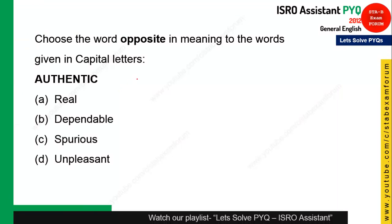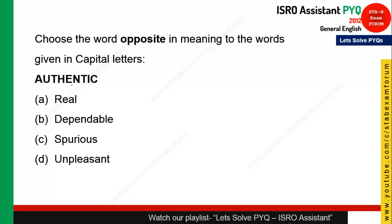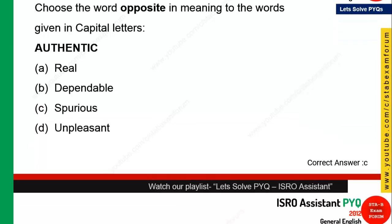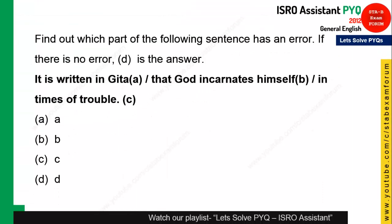The next question is again from antonyms. The word is 'authentic'. The synonym of authentic is 'real', but they are asking for the opposite — the antonym. The antonym of authentic is the word meaning fake, which is not real. So option C is the right answer.